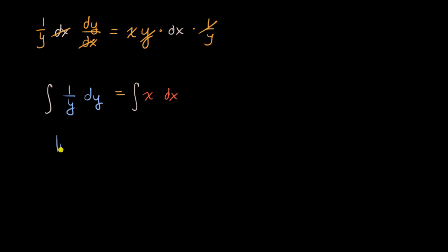this would be the natural log of the absolute value of y. And then this is going to be equal to the antiderivative of x is x squared over two, and then we want to put a constant on either side, I'll just put it on the right-hand side, plus c, this ensures that we're dealing with the general solution.